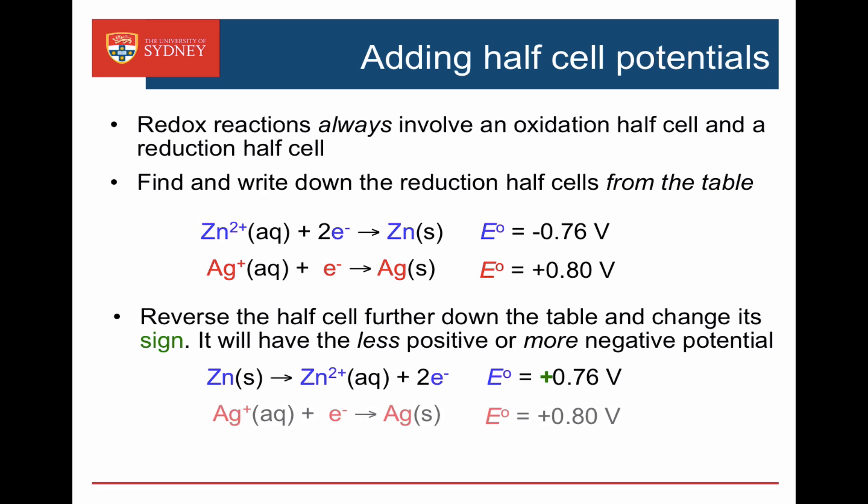Now we have an oxidation we can couple with a reduction — silver ion going to silver, which is plus 0.8 volts. We add the two things together to give us a whole cell potential of 1.56 volts: 0.76 plus 0.8 equals 1.56 volts.